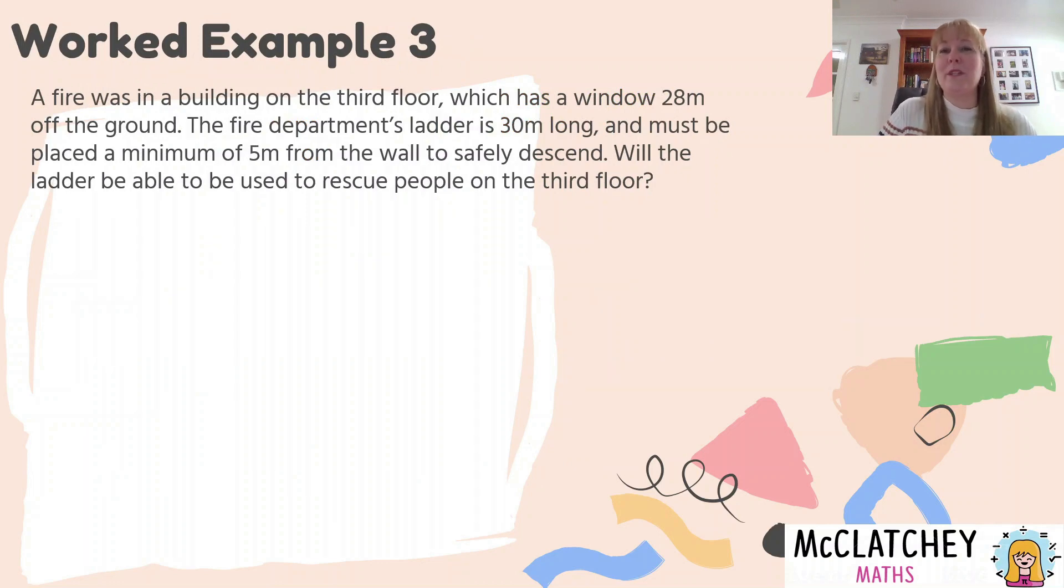Let's look at our third worked example today. This is a worded problem. And I often find this is the one where people who are great at working with just simple triangles kind of get a little bit unstuck. So let's read the problem together first. There was a fire in a building on the third floor, and it has a window that's 28 meters off the ground. Now the fire department's ladder is 30 meters long, but it must be placed at a minimum of five meters from the wall so that you can safely descend down the ladder. Will the ladder be able to use to rescue the people on the third floor?